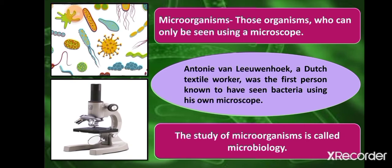Antony van Leeuwenhoek was a Dutch textile worker who was the first person known to have seen bacteria using his own microscope. His microscope was able to magnify objects up to 300 times their original size. He first observed microorganisms in rainwater. He was the first microscopist and is credited as the father of microbiology. The branch of science that studies microorganisms is called microbiology.